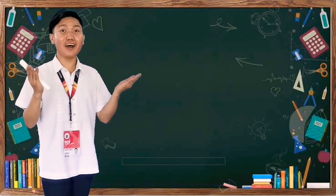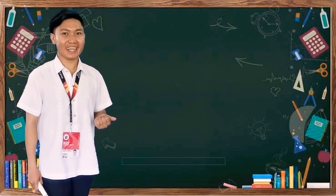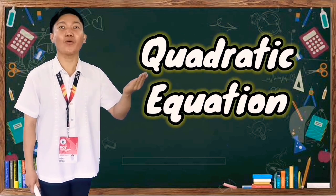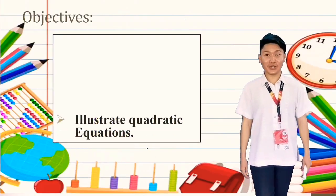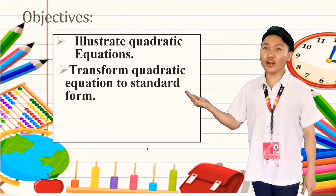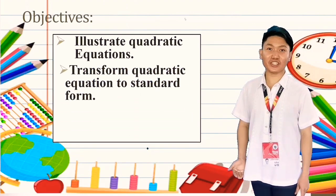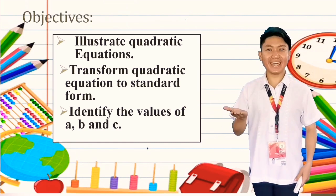We will be talking about another type of equation. But what type of equation would it be? This will be quadratic equation. Today, we are going to illustrate quadratic equation. And of course, we are going to transform quadratic equation to standard form and identify the values of A, B, and C.